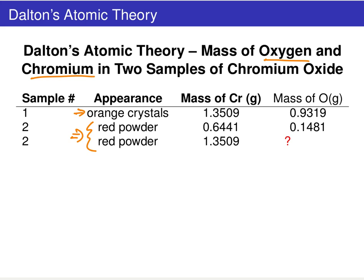What Dalton ended up doing was looking at the breakdown results of decomposing each sample into its respective elements — chromium and oxygen. If you break down sample one, the orange crystals, he found 1.35 grams of chromium and 0.93 grams of oxygen.